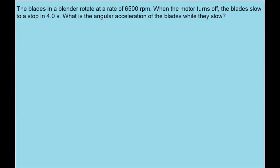In this problem, we want to find the angular acceleration of a blender blade as it slows down. We're given the initial angular velocity of the blades as 6500 revolutions per minute.